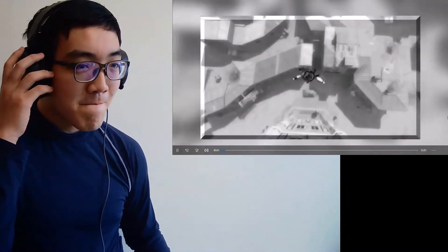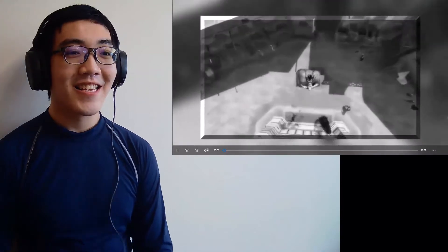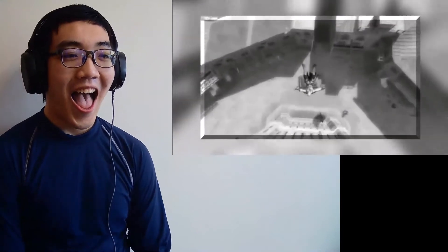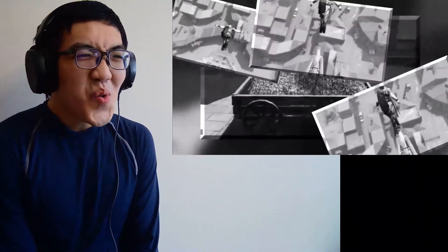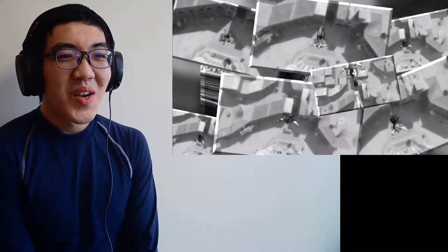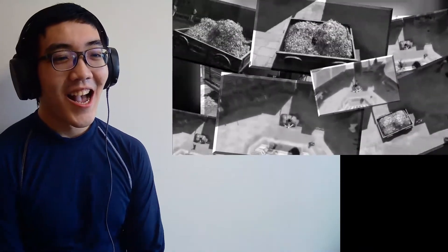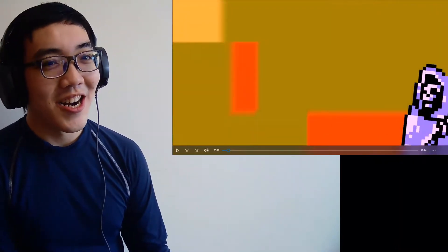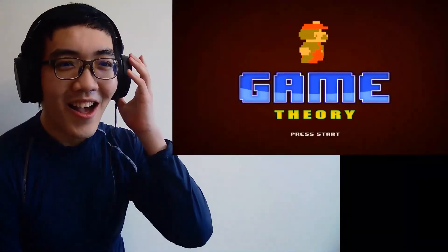Ezio jumps from a building, lands in a haystack, gets up fine, does it all again. Ezio's free fall, but can he survive? I'm not too sure. Falling from that height, my goodness, seriously.